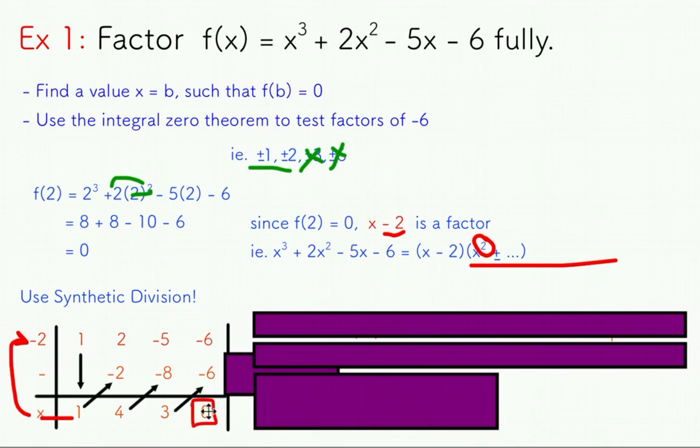This is important, that's a remainder of zero. You should get a remainder of zero in this case, because remember, we chose a factor that will make our original polynomial zero when we substitute in that two that we chose.